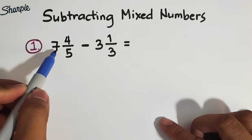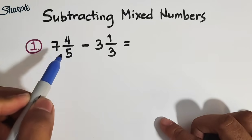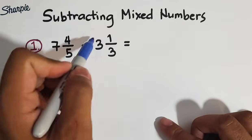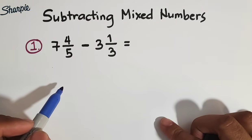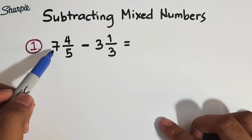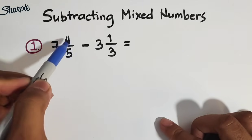So we have here 7 and 4 over 5 minus 3 and 1 third. These two things here are called mixed numbers. So recap lang tayo. Mixed numbers is a combination of a whole number and a fraction.